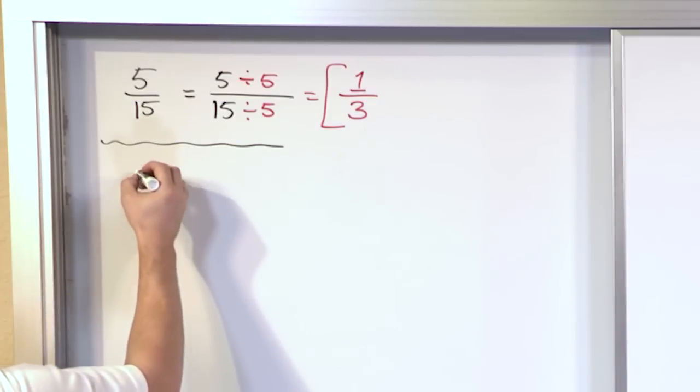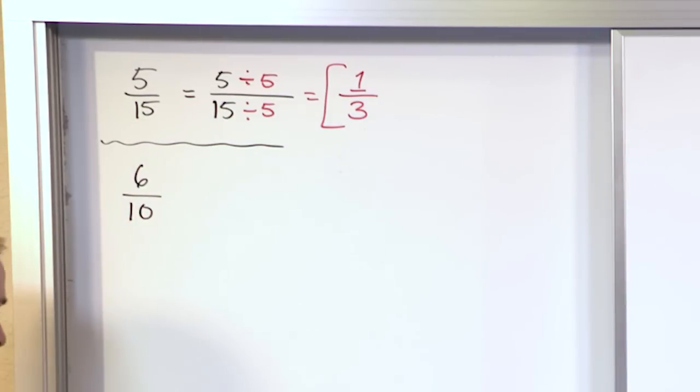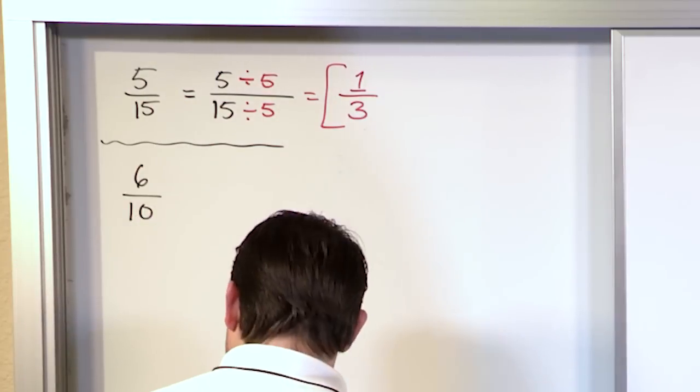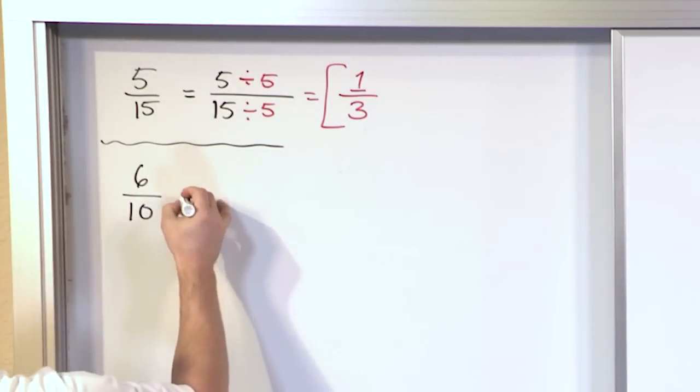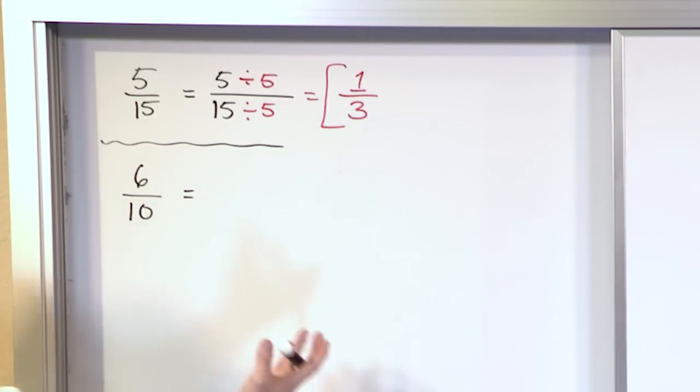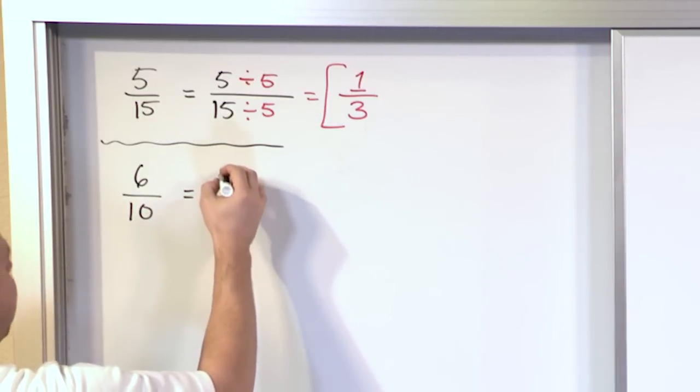What about 6 tenths? 6 tenths. Is this simplified? It's not simplified because I know I can divide by 2 right away and divide both of them by 2 and that's going to make it simpler.